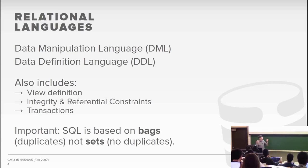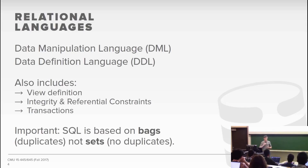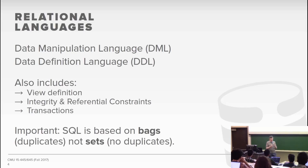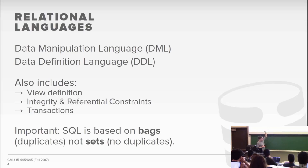One very important thing: SQL is not based on sets the way relational algebra was. Instead, it's based on what are called bags — an unordered collection where you're allowed to have duplicates. A list has an order with duplicates; a set has no order and no duplicates; a bag has no order but allows duplicates. We do this in SQL because it's expensive to remove duplicates. Most people don't actually need this, so it's not worth the overhead. By default, SQL will allow duplicates, whereas relational algebra does not.